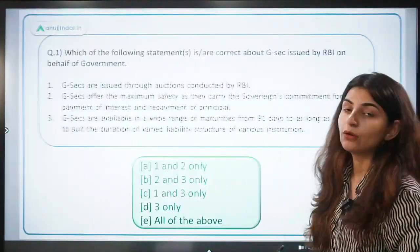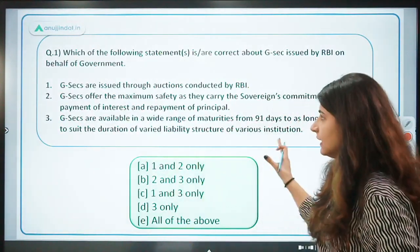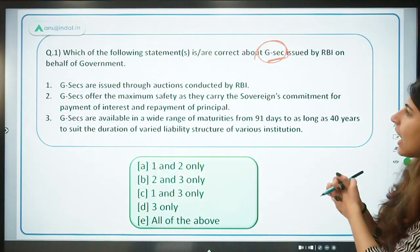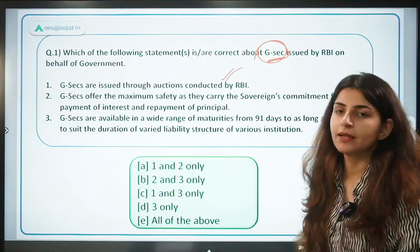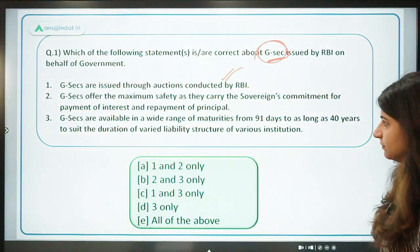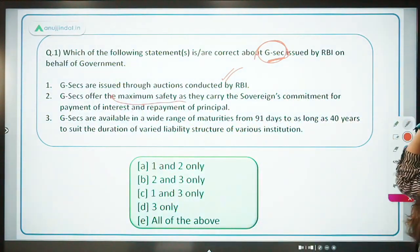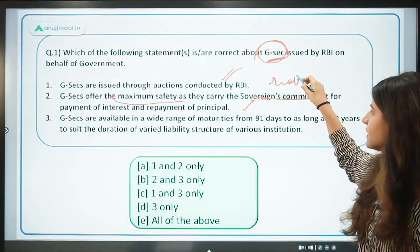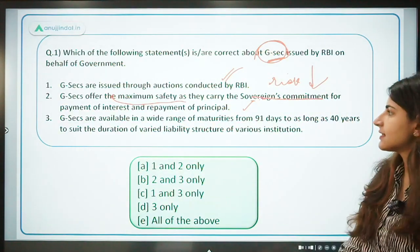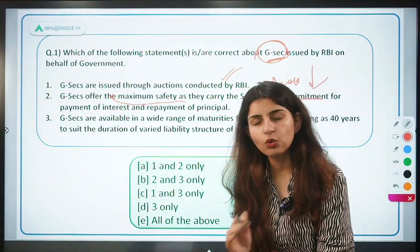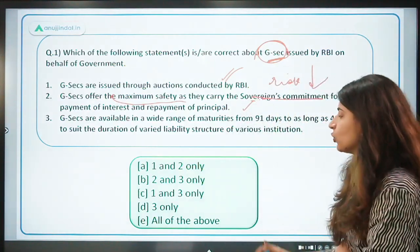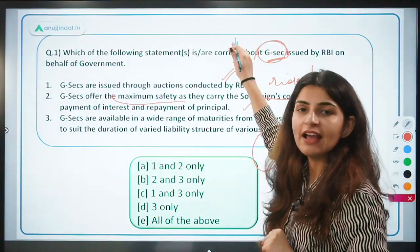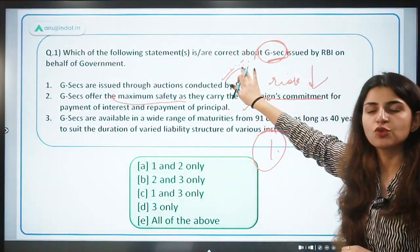Now for practice questions. First: which of the following statements is correct about GSECs? GSECs are issued through auctions conducted by RBI — correct. They offer maximum safety as they carry the sovereign's commitment for repayment — correct. GSECs are available in maturities from 91 days to as long as 40 years — correct, because we're talking about all GSECs, not just T-bills.